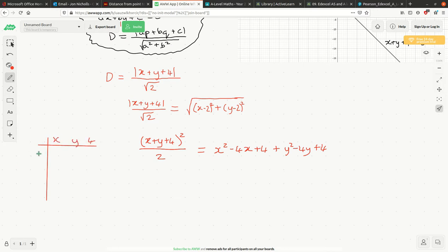X, Y, 4, X, Y, 4. I like a little grid. X squared, Y squared, 16. But we're also going to get 2XY's. We're going to get a couple of 4X's and a couple of 4Y's.